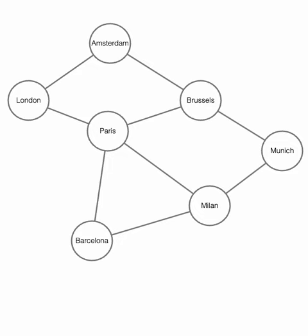Here's an example of that first traversal. We start at Paris, move to Milan, then to Barcelona. Barcelona's a leaf, so we move to Milan's other child, Munich. From there we move to Brussels, Amsterdam, and finally London.